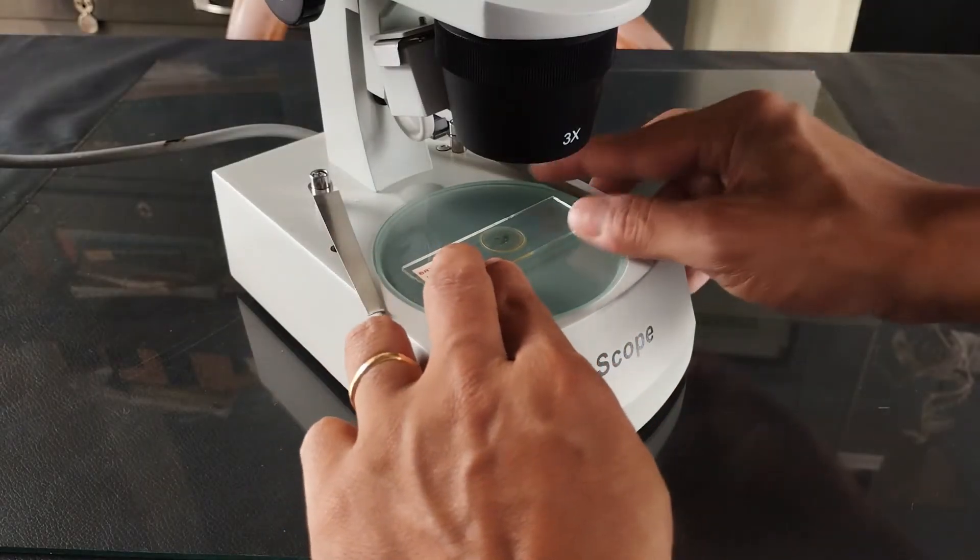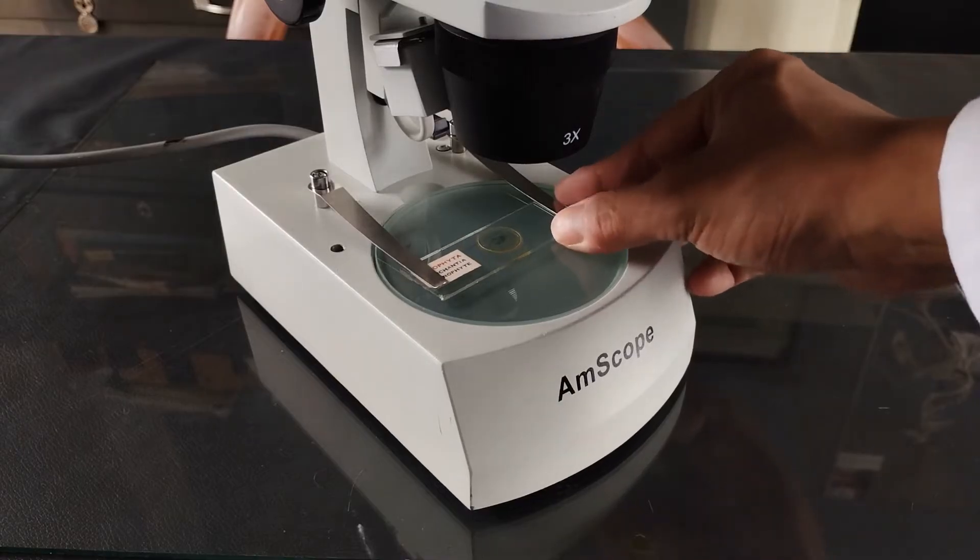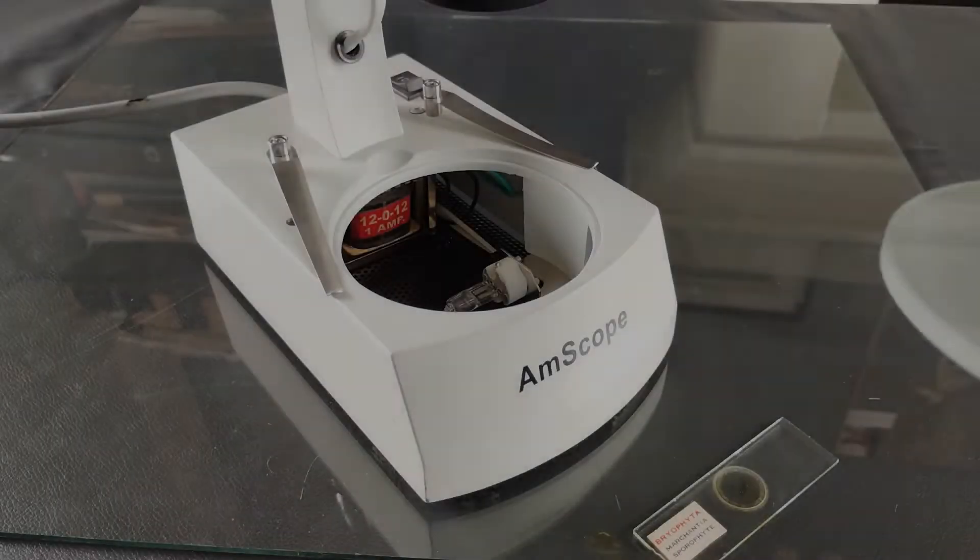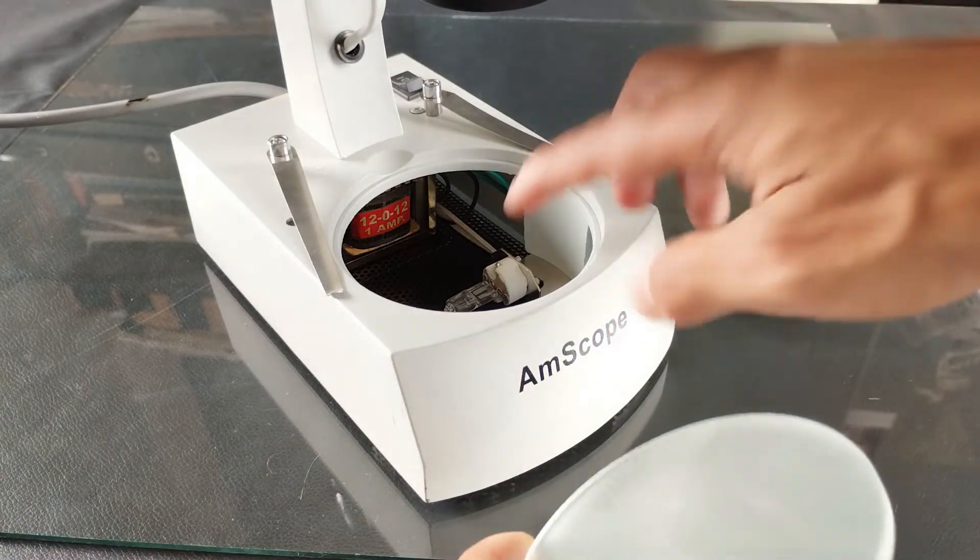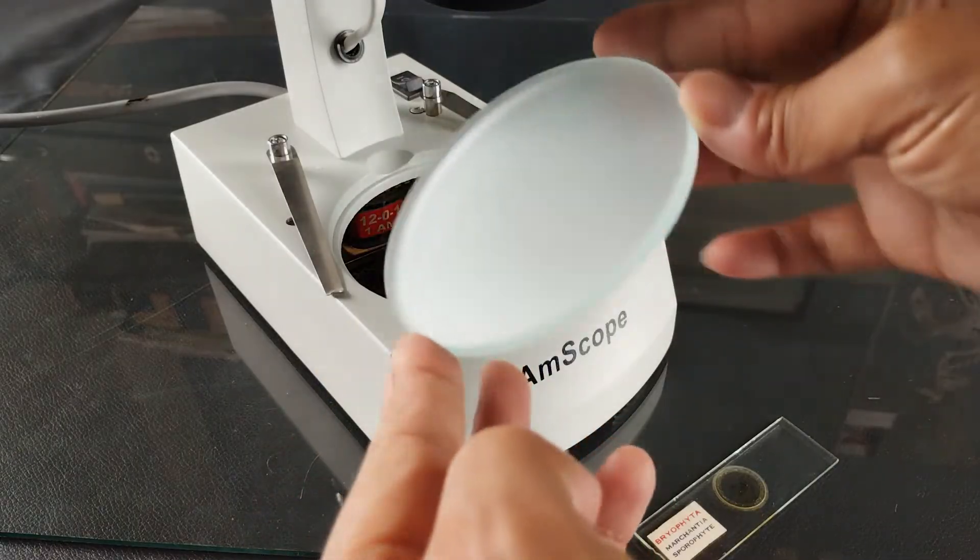Now, place the specimen on the stage and if required, secure the specimen with the stage clips provided. If the specimen is of a transparent type that requires transmitted light to view through it, then turn on only the light source located below the stage. Also use the frosted glass provided for the stage platform.